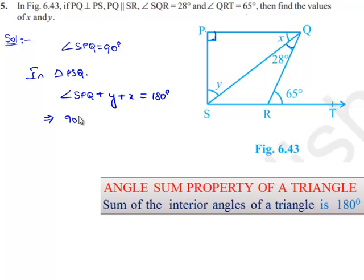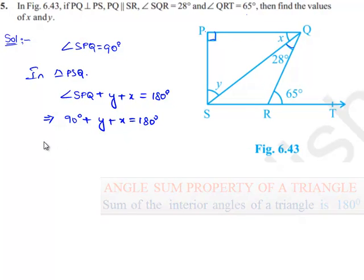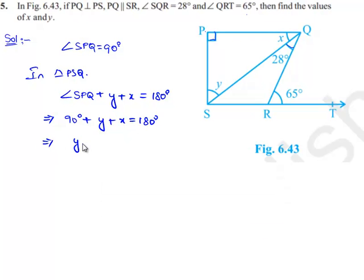Since angle SPQ is 90 degrees, we have 90 plus Y plus X equals 180 degrees, which implies Y plus X equals 180 minus 90, which is 90 degrees. Let us name this equation number 1.